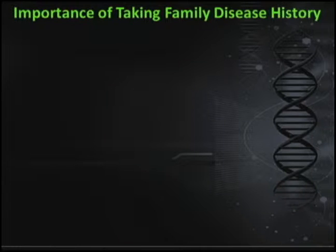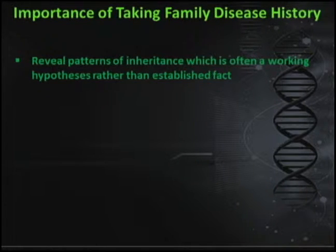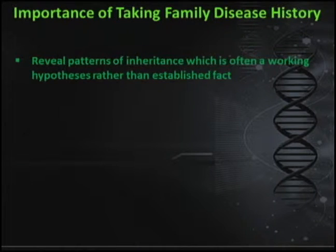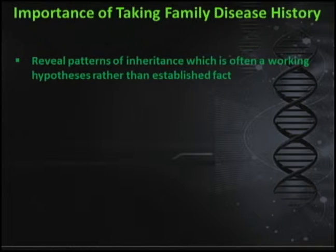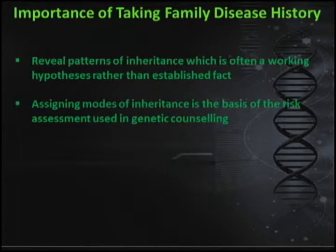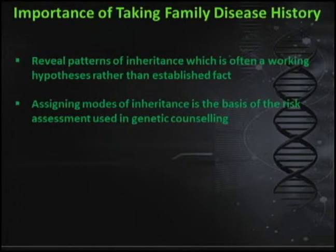Why do we need to take family history? It's very important for any genetic study to know the pedigree and family history. Family history helps us decide on the inheritance of the condition. When we don't know anything, it's actually a hypothesis, not an established fact, so we keep an open mind about the mode of inheritance. We then use the mode of inheritance to assign individuals within the family who are at risk of developing the disease, which helps for future genetic counseling.